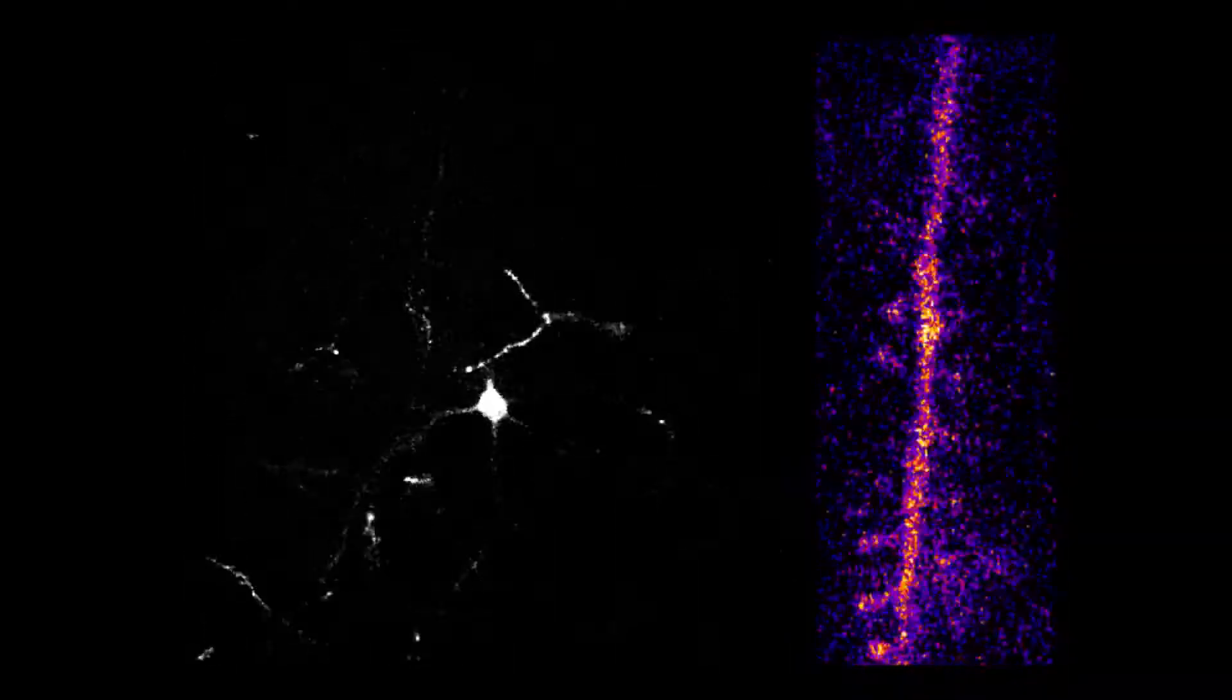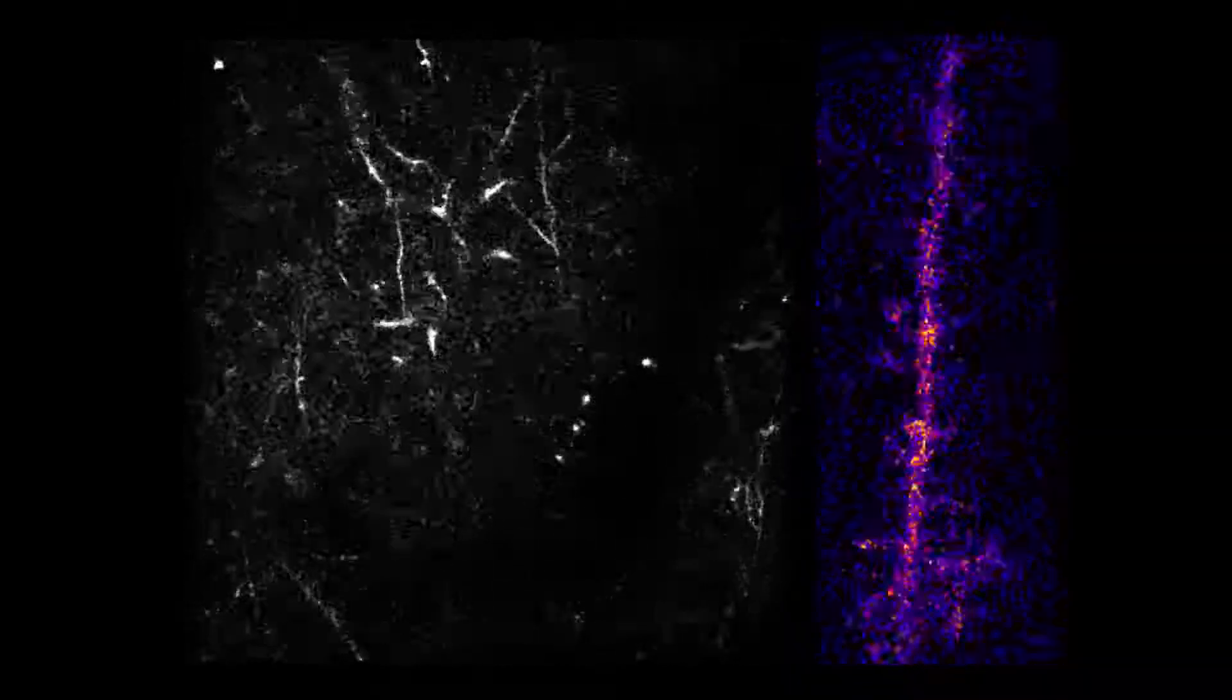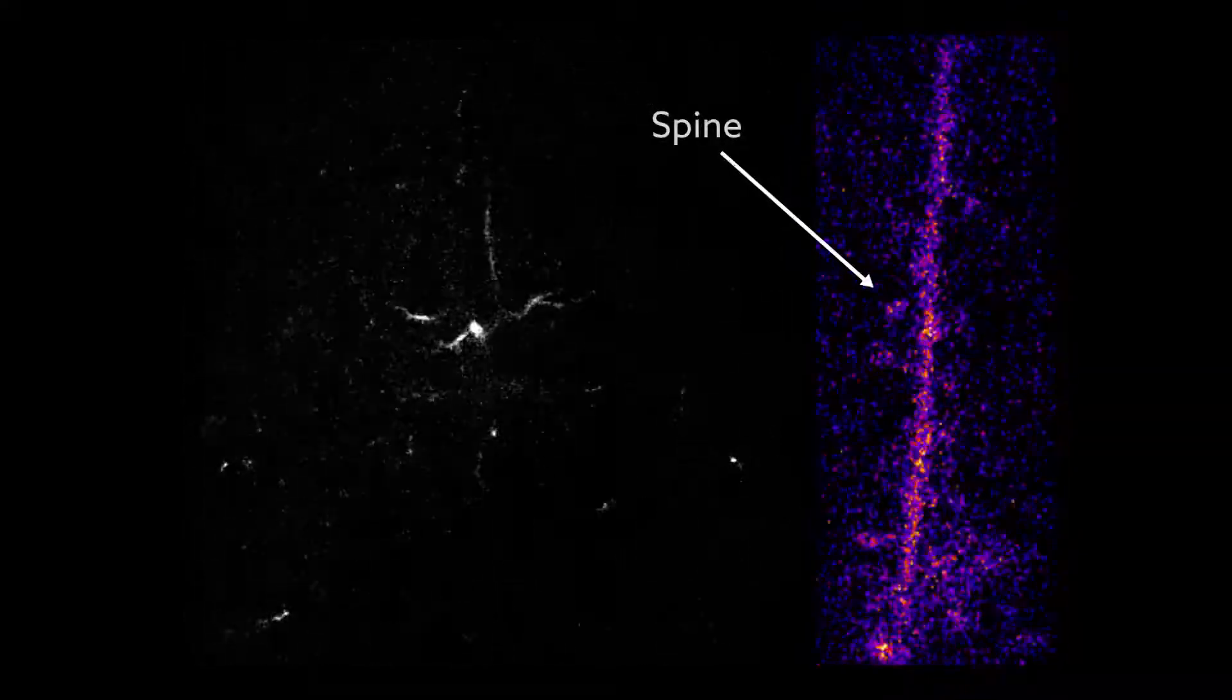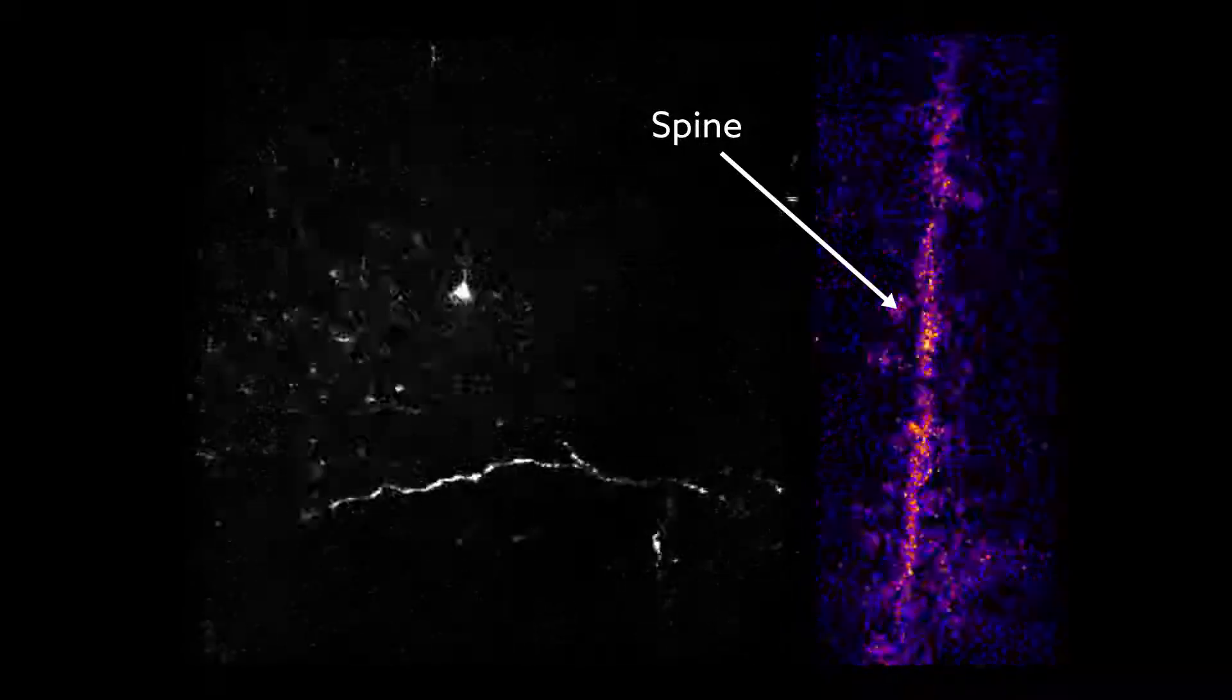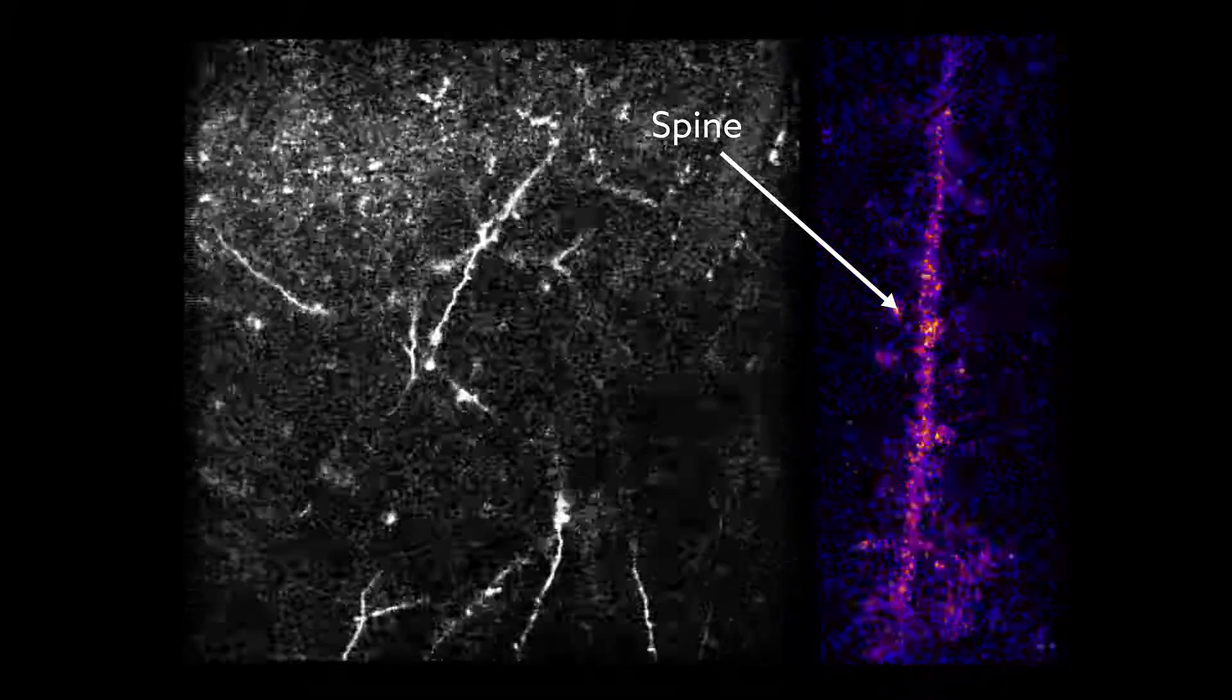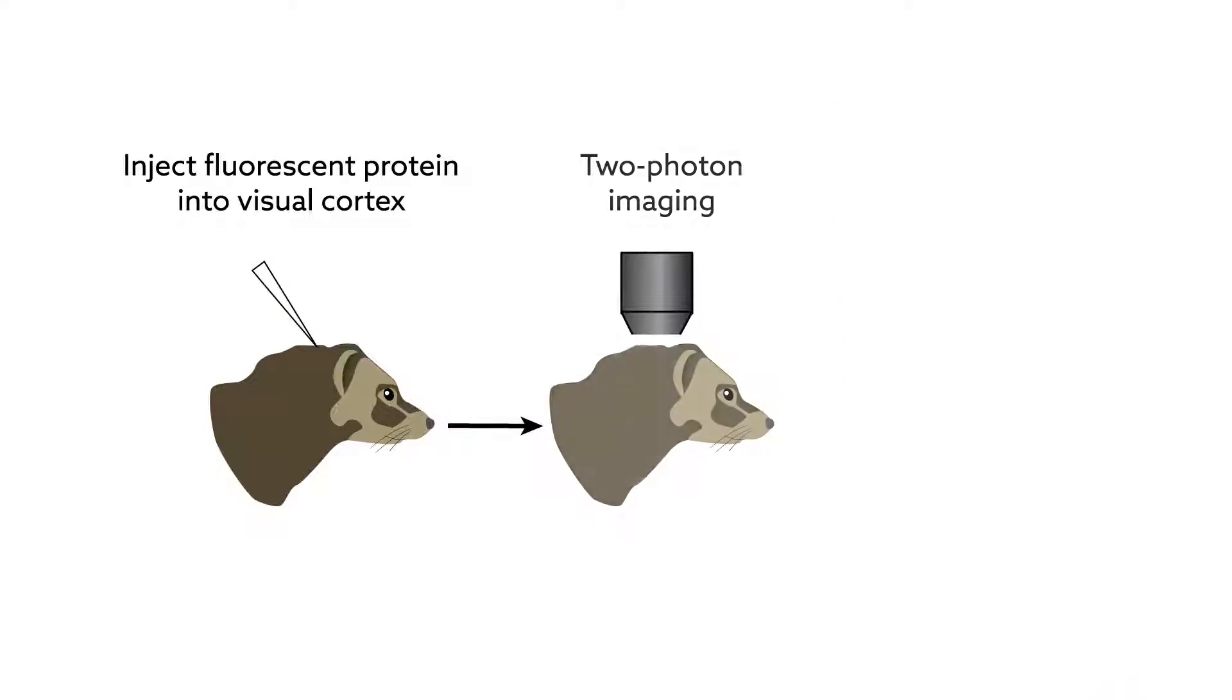To evaluate the degree of synaptic clustering in the circuits responsible for vision, the team mapped the spatial receptive fields of about 100 spines – the structures that receive synaptic inputs – on the dendrites of individual neurons in the visual cortex of ferrets. They used two-photon imaging to record activity while the animals looked at a variety of white and black bars.